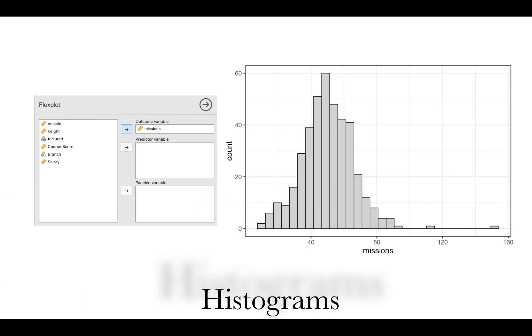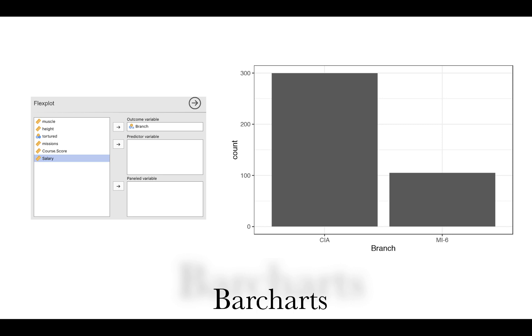So let's look at some examples. I'm just going to go through these quickly without demonstrating how they are to be done. So histograms. We told Flexplot we wanted to look at the distribution of missions, and it knew that it was a numeric variable, and so it knew to do a histogram. And it was also smart enough that it recognized that we handed it a categorical variable, so it did a bar chart.